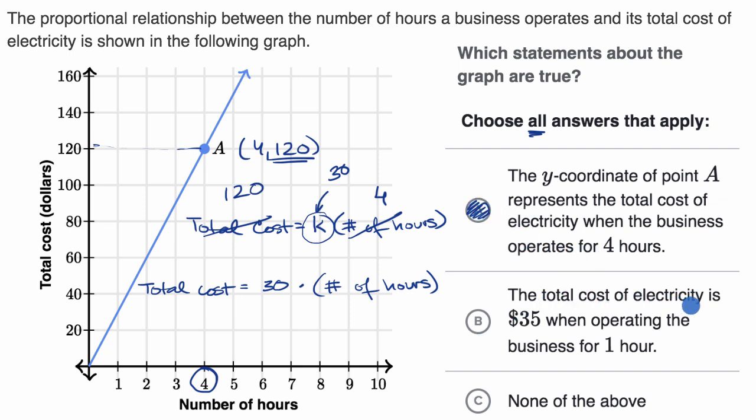The total cost of electricity is $35 when operating the business for one hour. So let's go to one hour here. This is going to be the total cost. Now, you might say, hey, this looks kind of close to $35, but that's why it was useful for us to write this relationship right over here. Because what we see is that our total cost is going to be 30 times our number of hours. And so our total cost here is actually going to be 30, not 35, and it actually does look smack dab in between 20 and 40 versus a little bit closer to 40. So this one is not going to be true.